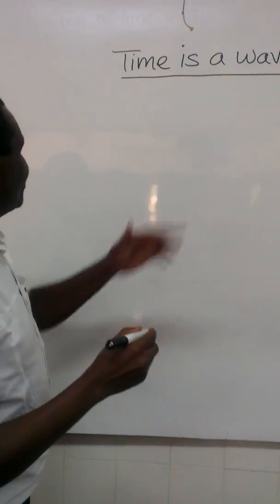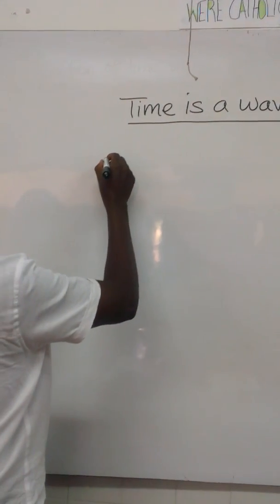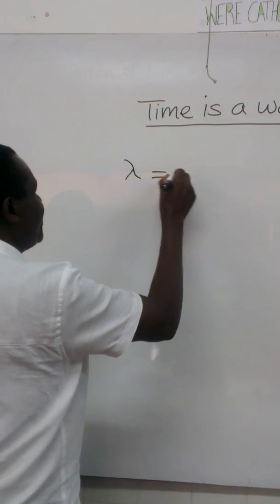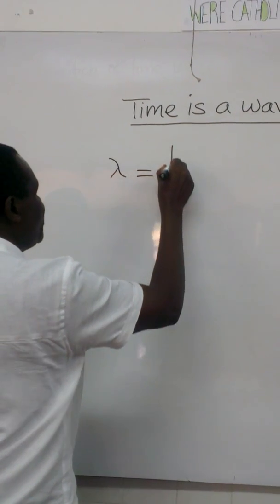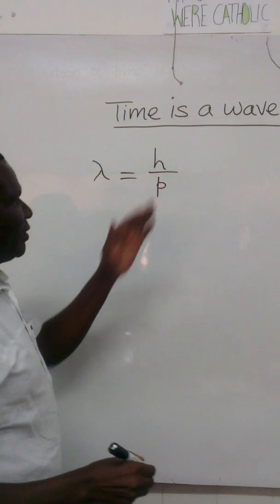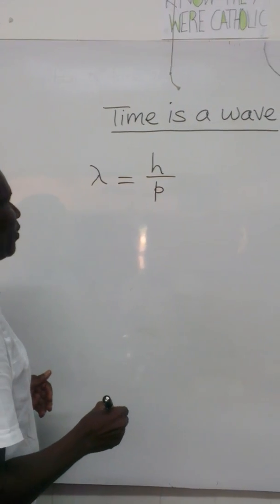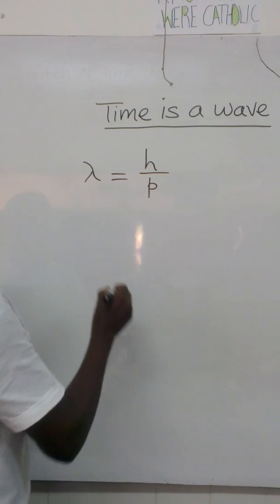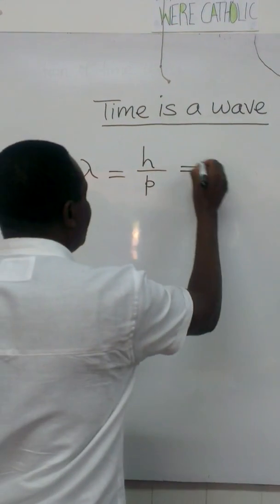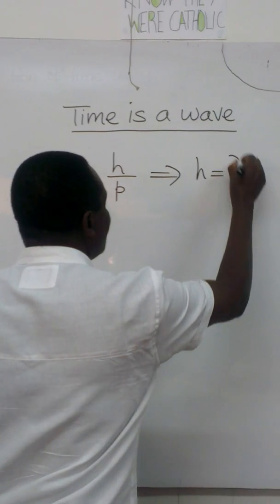Time is a wave. According to De Broglie, lambda is equal to h over p, where h is Planck's constant and p is momentum. This implies that h is equal to lambda times p.